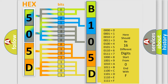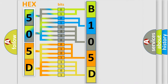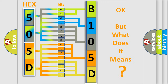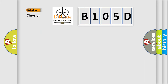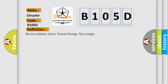We now know in what way the diagnostic tool translates the received information into a more comprehensible format. The number itself does not make sense to us if we cannot assign information about what it actually expresses. So, what does the diagnostic trouble code B105D interpret specifically for Chrysler car manufacturers?